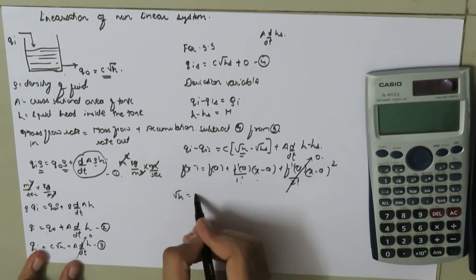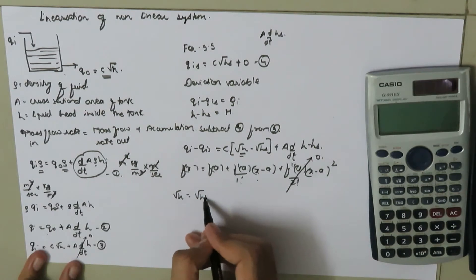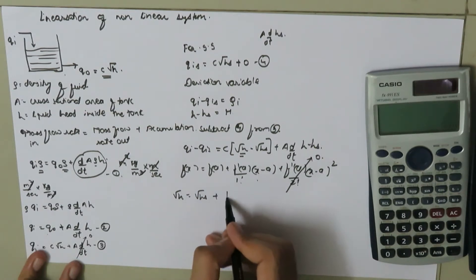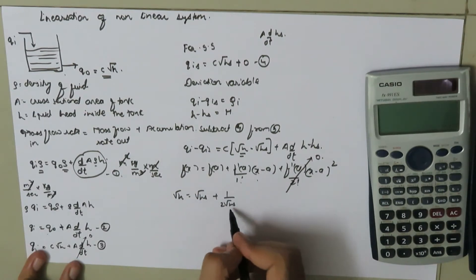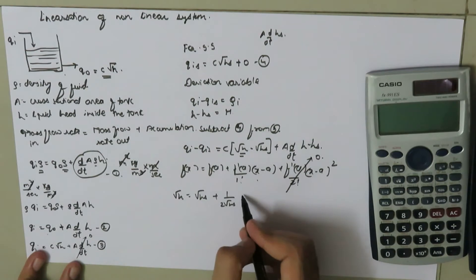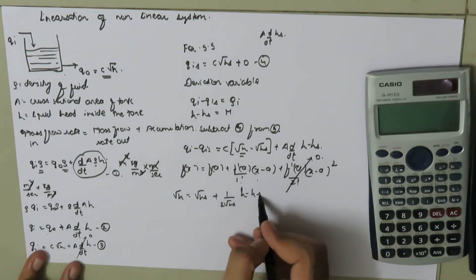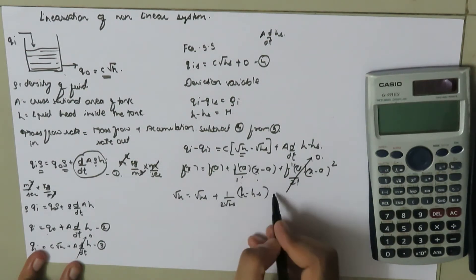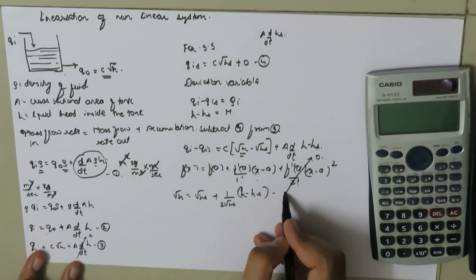Applying the Taylor series to √H around H_s: √H ≈ √H_s plus (1 / (2√H_s)) times (H minus H_s). This is equation number five.